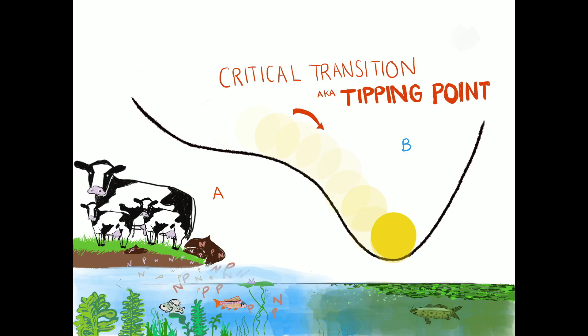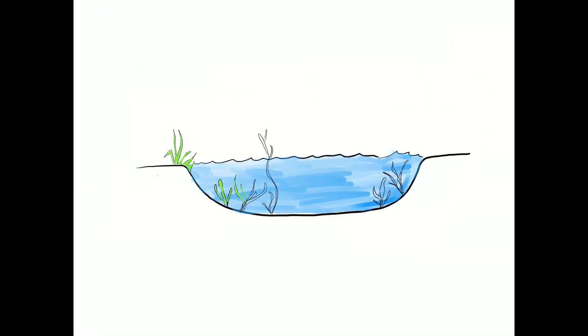This is called a critical transition or tipping point. This tipping of the system is due to internal reinforcing mechanisms of the system.